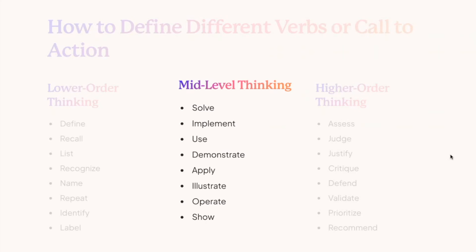Mid-level thinking is where we want the system to bring information from the data bank but also do some analysis. Verbs like analyze, apply, illustrate, operate, show, and implement represent mid-level thinking. It's not just retrieval of information but retrieval combined with analysis. Most of the time, when writing an introduction, literature review, or conclusion section of a research article, we use mid-level thinking — summarizing information while providing implementation, application, or demonstration.